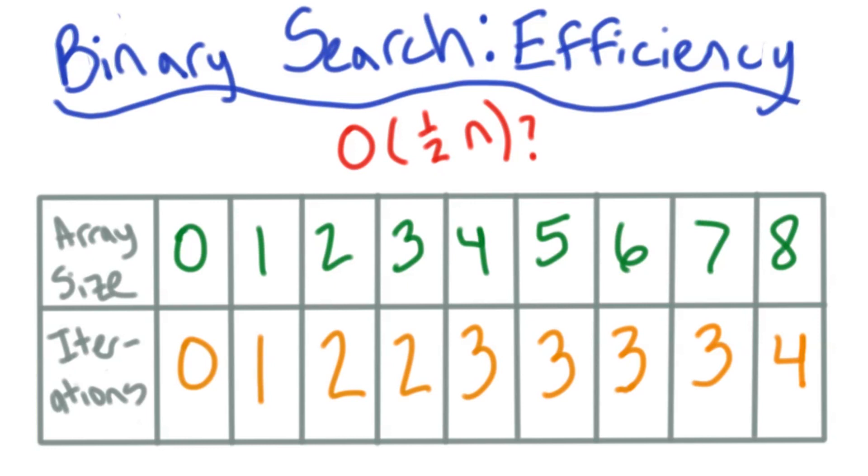Let me think about exactly what that means for a second. If I cut the array in half every time I go through an iteration, that means every time I double the number of elements, I need to do an extra iteration.